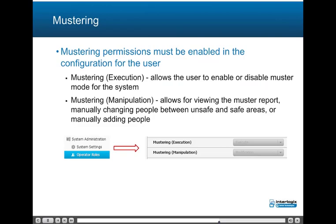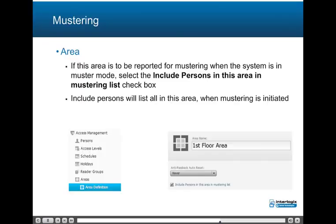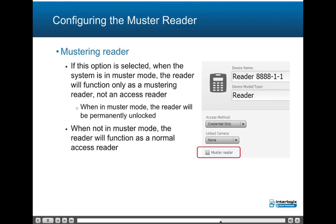Mustering permissions must be enabled in the configuration for the user. Mustering execution allows the user to enable or disable muster mode for the system. Mustering manipulation allows for viewing the muster report, manually changing people between unsafe and safe areas, or manually adding people to the mustering or dangerous location. If a specific area is to be reported for mustering when the system is in muster mode, the 'Include Persons in this area in mustering list' checkbox must be selected. The Mustering Reader option, if selected on the reader configuration, when the system is in muster mode, the reader will function only as a mustering reader, not an access reader; when in muster mode the reader will be permanently unlocked. When not in muster mode, the reader will function as a normal access reader.